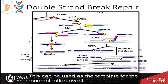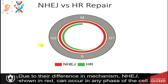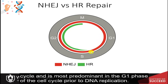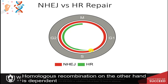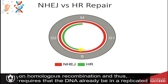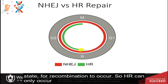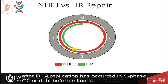This 3' overhang can be used as the template for the recombination events. Due to their differences in mechanism, NHEJ, shown in red, can occur at any phase of the cell cycle and is most predominant in the G1 phase prior to DNA replication. Homologous recombination, on the other hand, requires that the DNA already be in a replicated state, so HR can only occur after DNA replication in S phase, G2, or right before mitosis.